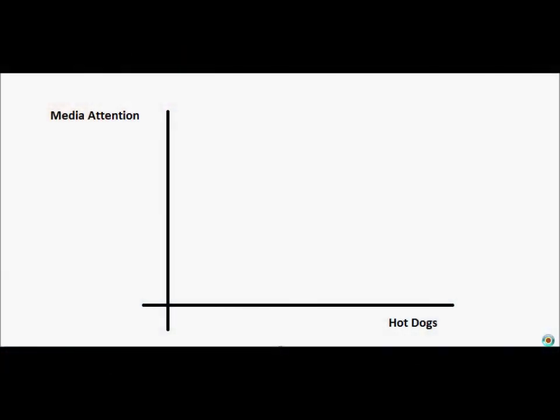Let's get started. In this example, we're going to think about a person who cares about two things, media attention and number of hot dogs consumed. Maybe a hot dog eating champion might care about these two things and might be thinking about trading off these two things.